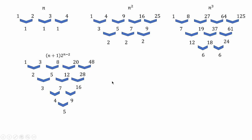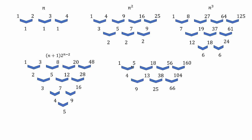The general term for this sequence is represented by this formula. Let's look at another pattern and find the differences of the consecutive terms. Here also we don't find a common difference, but we can see a pattern in these diagonal elements. It is nothing but n squared, which we have already found. So the general term for this sequence is represented by this formula.